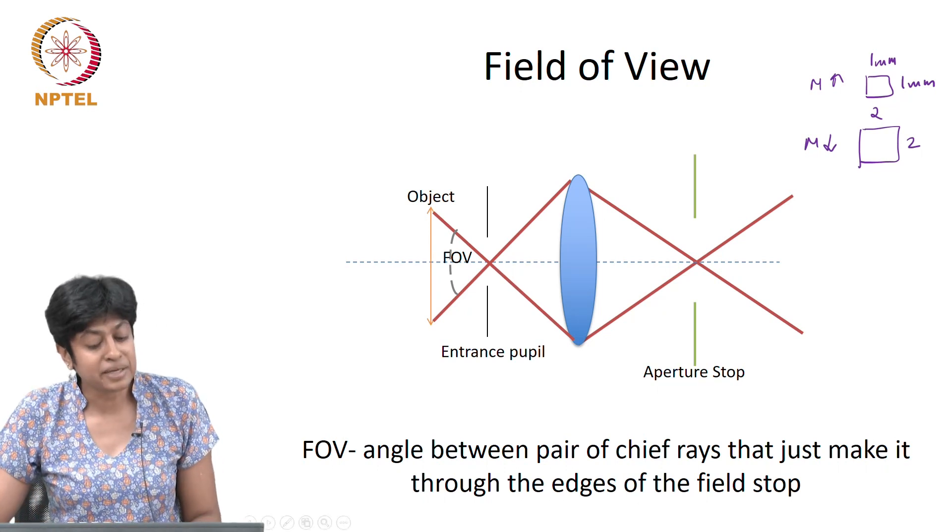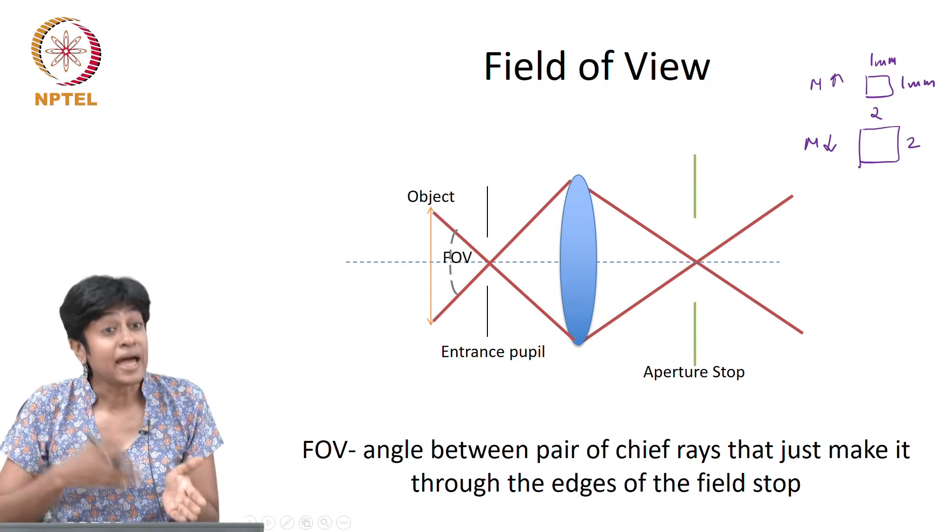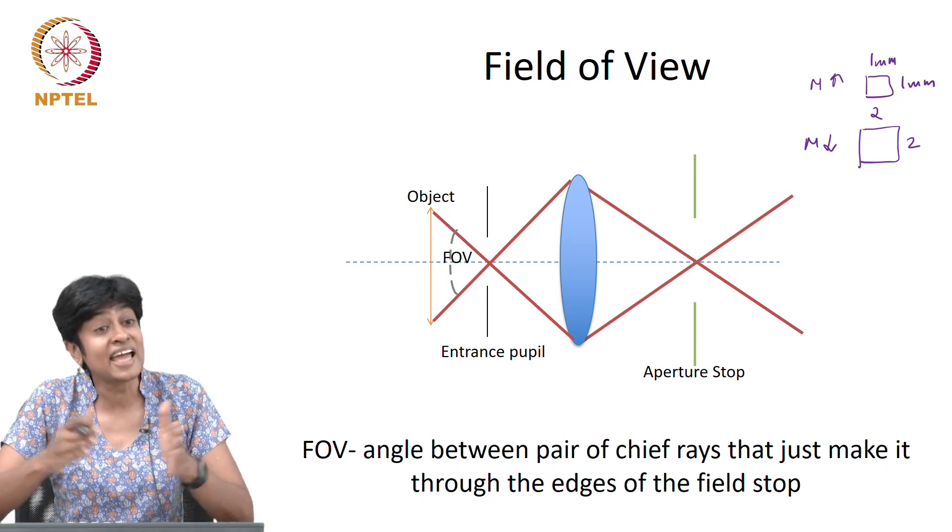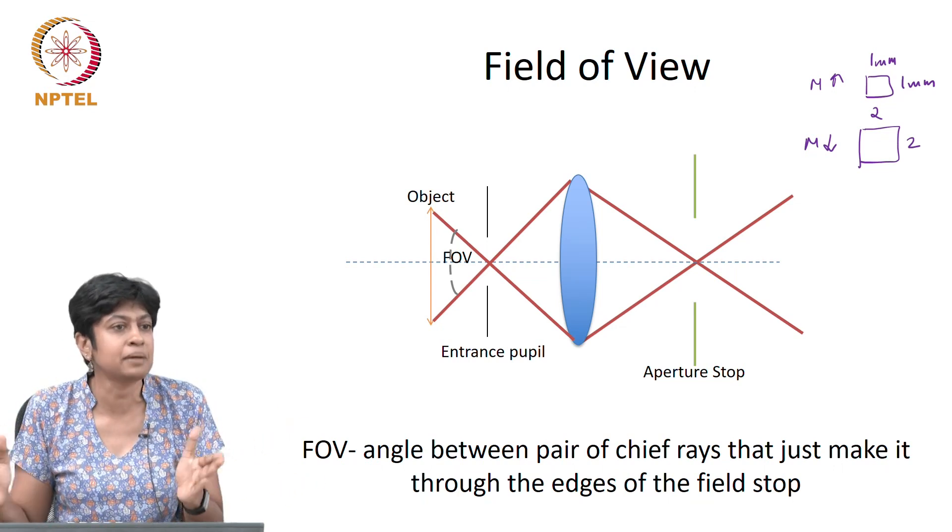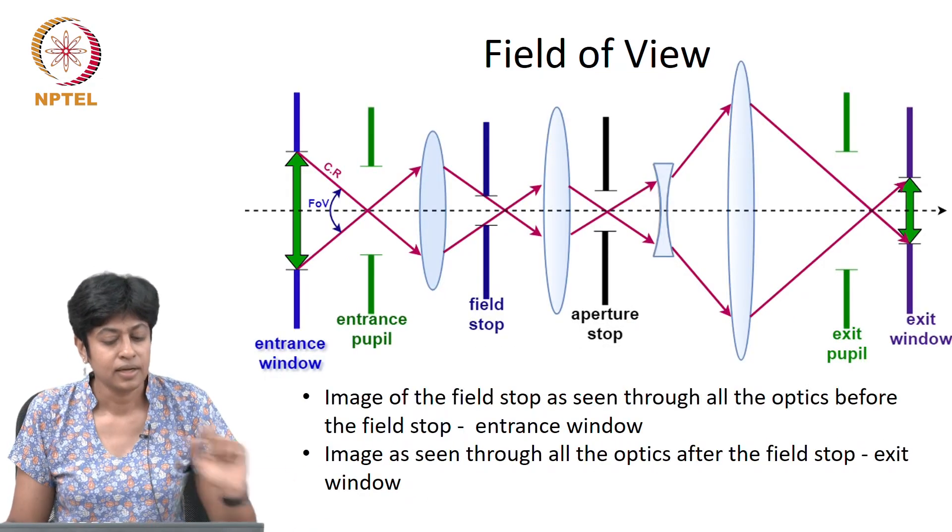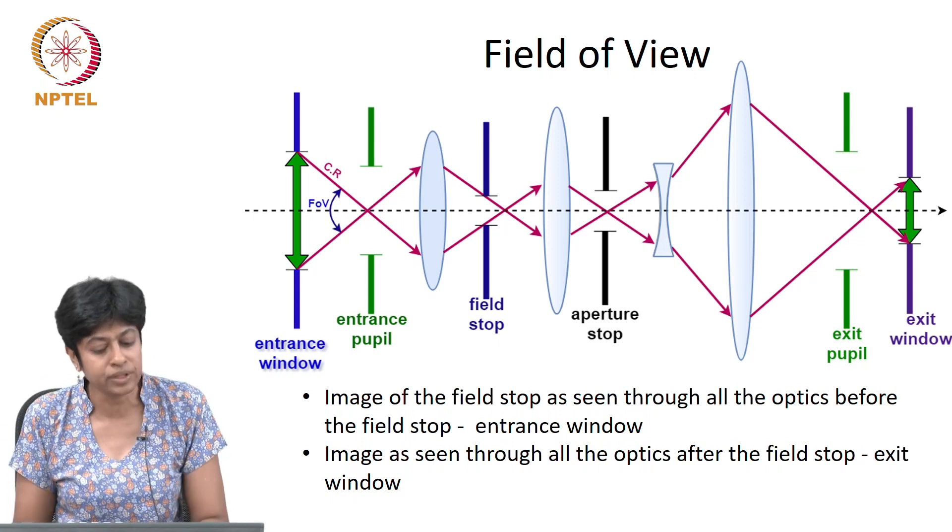So the field of view is basically the angle between the two extreme chief rays that make it through the system. That tells you what is the area over the object that I am able to image.